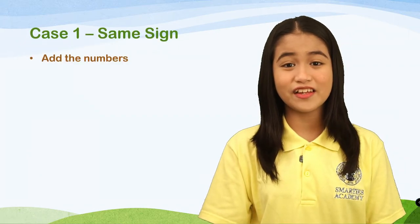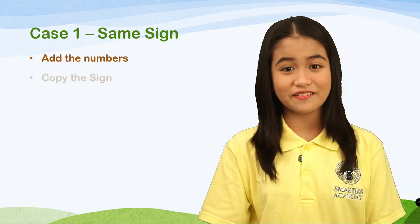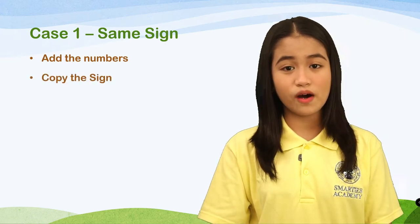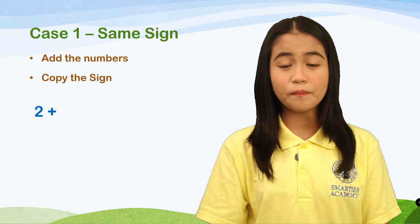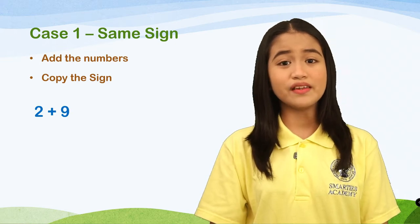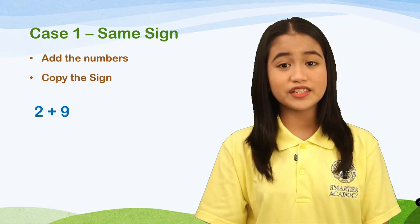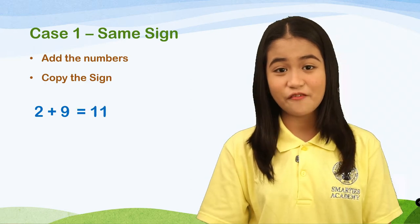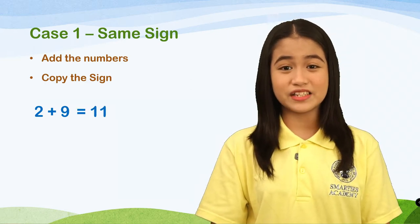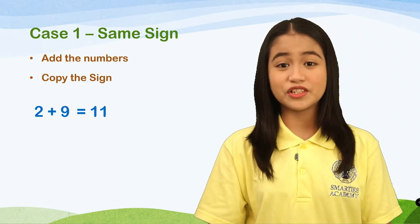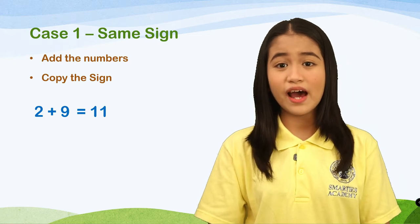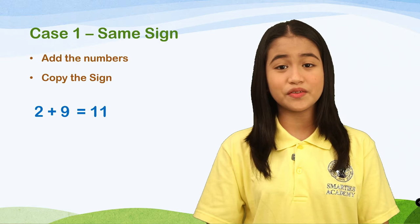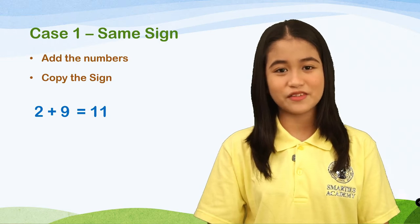Add the numbers and then copy the sign. Example number 1: 2 plus 9. Since 2 and 9 are both positive, we will just add 2 and 9, and the answer is 11. Since they are both positive, we will just copy the sign — but we don't have to write positive here because it is automatically understood as positive 11.